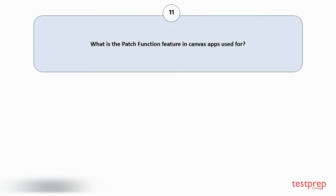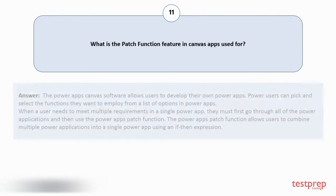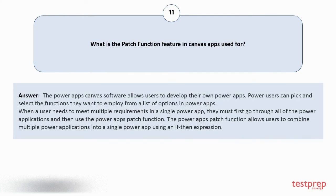Question number 11. What is the patch function feature in Canvas apps used for? The Power Apps Canvas software allows users to develop their own Power Apps. Power users can pick and select the functions they want to employ from a list of options. When a user needs to meet multiple requirements in a single Power App, they must use the Power Apps patch function, which allows users to combine multiple Power applications into a single Power App using an if-then expression.